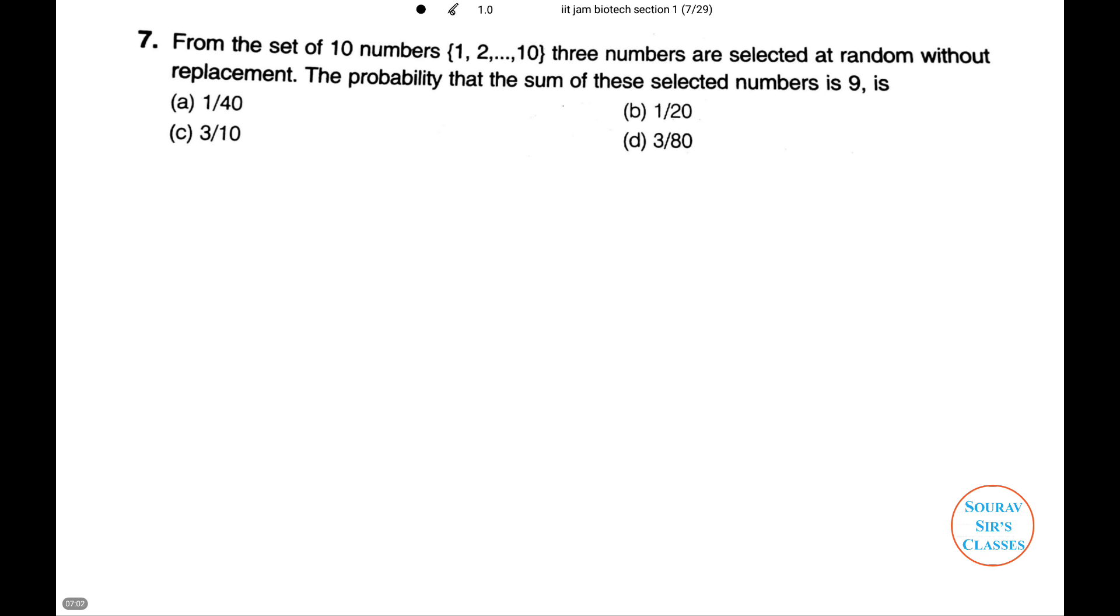The next one is kind of my favorite. We are given a set of ten numbers, one to ten. Three numbers are selected at random without replacement. This is very important to consider. Now, we need to find the probability that the sum of the selected numbers is nine. This is one of the questions where students usually make errors. So, let us do it in a very simple process. First, we will find the possible three numbers or three number sets whose sum is equal to nine.